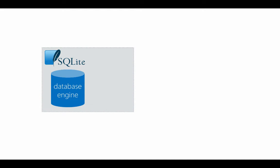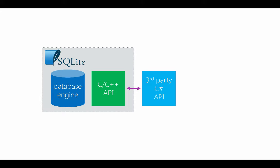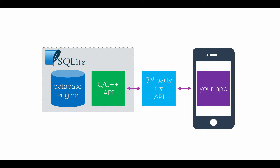But first let's take a deeper look at SQLite. The SQLite engine exposes a C++ API which is then accessed by .NET through a C# wrapper. We can then use a third-party library that provides a higher-level C# API to that SQLite database, and there are several great options to choose from.